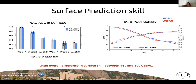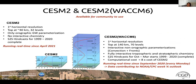Looking specifically at NAO and MJO predictability — the two features most likely to be affected by the stratosphere — we again found no significant difference. The 30-level and 46-level models have exactly the same NAO predictability and the same MJO predictability. This was disappointing, but I'll come back to explain why I think we're not seeing the stratospheric signal at the surface — it doesn't mean the stratosphere is not important.